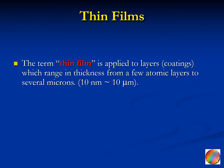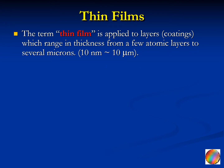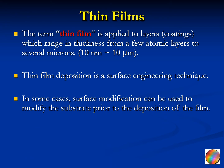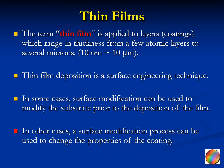Now let's talk about thin films. What is a thin film? The term thin film is applied to layers or coatings which range in thickness from a few atomic layers to several microns — roughly from 10 nanometers all the way to 10 micrometers. Thin film deposition is a surface engineering technique. In some cases, surface modification can be used to modify the substrate prior to deposition of the film to prepare it, or a surface modification process can be used to change the properties of the coating after its deposition.